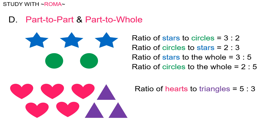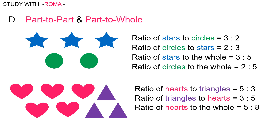Another example: the ratio of hearts to triangles is five is to three. The ratio of triangles to hearts is three is to five. The ratio of hearts to the whole is five is to eight. And the ratio of triangles to the whole is three is to eight.